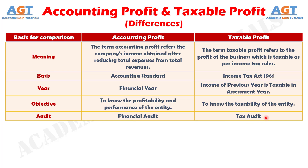There are many points which differentiate the two entities, which are discussed here in detail. In simple words, both of them are correct in their place. Accounting profit is calculated as per the accounting principles and assumptions, while taxable profit is calculated as per the prescribed tax rules of every country. Both the profits are calculated for a specific period. Many times accounting profit is greater than the taxable profit.